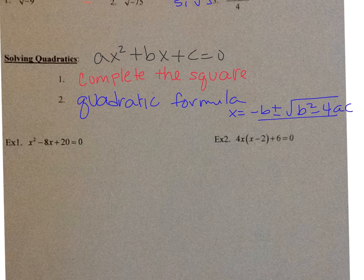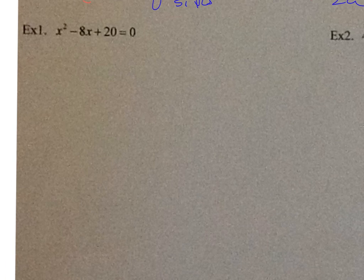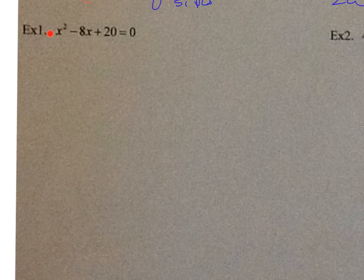Number one: x² − 8x + 20 = 0. There's a leading coefficient of 1 and the middle term is even, so we'll use completing the square — it's quicker here. We subtract 20 from both sides to get x² − 8x = −20.